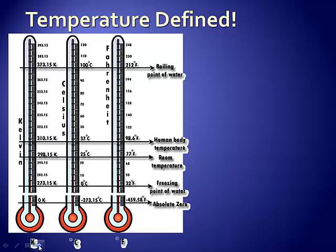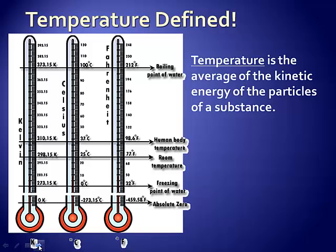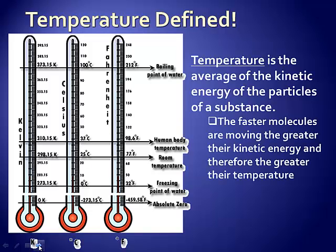One measure of energy, which is commonly confused with heat, is temperature. Temperature is actually a measure of the average kinetic energy of the particles of a substance. So the faster molecules are moving, the greater their kinetic energy, and therefore the greater their temperature.